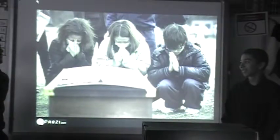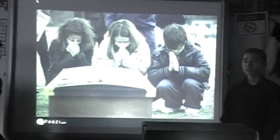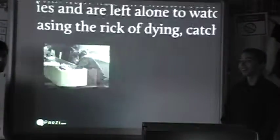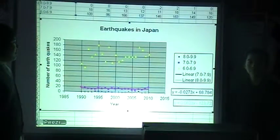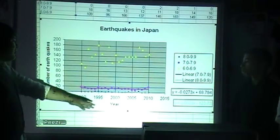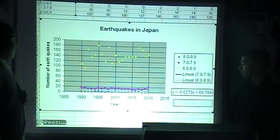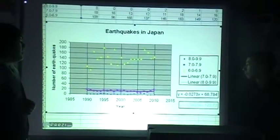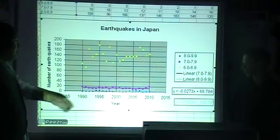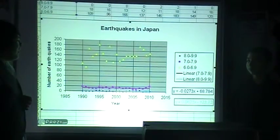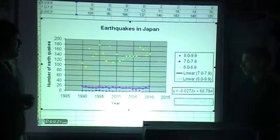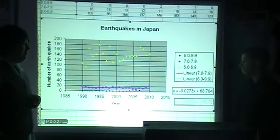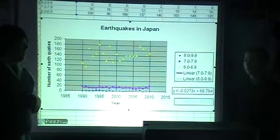There is a picture of the Japanese praying for the loss of their children that happened with the earthquake. This chart is a scatter plot with data from 1990 to 2010. The yellow triangles are earthquakes with a magnitude of 6.0 to 6.9 on the Richter scale, the purple ones are 7.0 to 7.9, and the blue ones are 8.0 to 9.9. The equations on the left side can be used by scientists and geologists to predict future earthquakes and how many may occur.